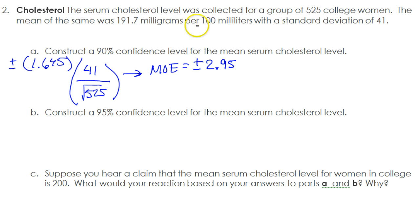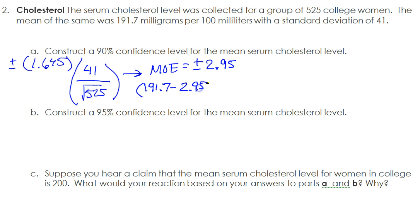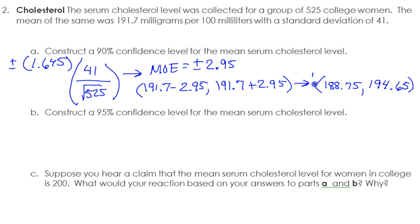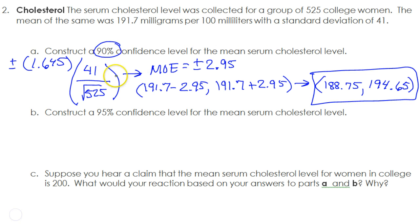So what is the mean? The mean is 191.7, so that is what we will add and subtract from. Our confidence interval comes from doing 191.7 minus 2.95 and 191.7 plus 2.95. So we can be 90% sure that the mean cholesterol level for all college women is somewhere inside this interval.